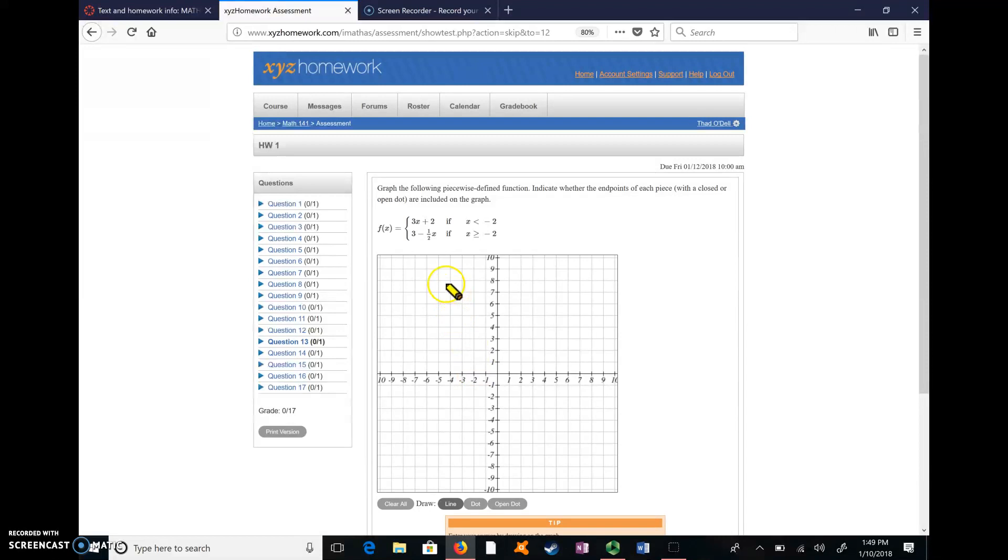The equation I'm trying to graph is 3X plus 2, which is a linear equation that has a slope of 3. When X equals negative 2, if we plug it in, we get negative 6 plus 2 is negative 4. So the point negative 2, negative 4 is not on this graph because it says X is less than negative 2. So I'm going to choose an open dot. I click down here on open dot, and I go up to negative 2, negative 4, and I put an open dot.